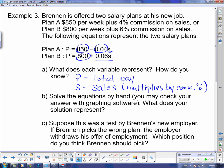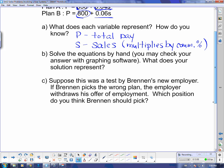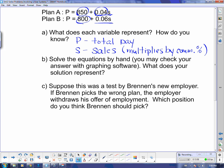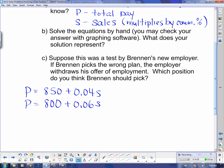Solve the equations by hand. You may check your answer with the graphing software. What does your solution represent? So we're going to solve these by hand. So this is P equals 850 plus 0.04S. And P equals 800 plus 0.06S. And I'm going to solve by elimination. I'm going to tell you why I'm going to solve by elimination. The P's already have the same number in front of them. And so they're going to be very easy to get rid of.